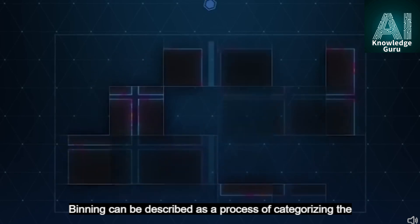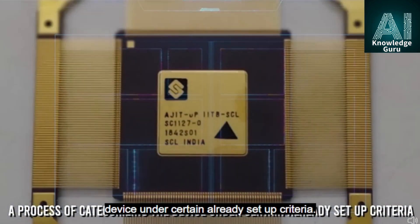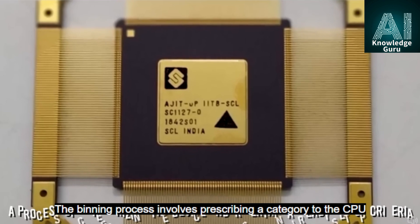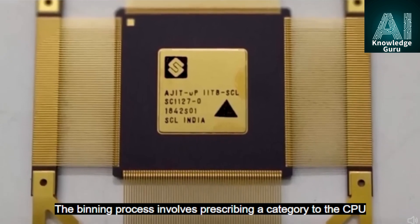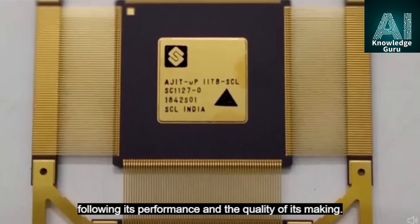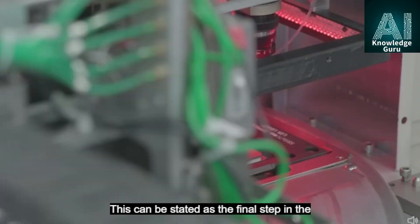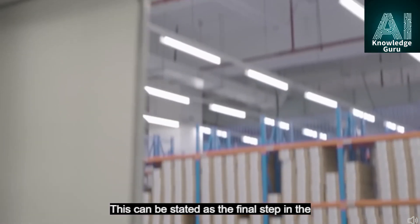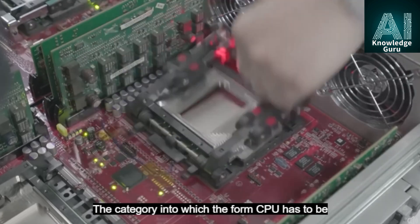Binning can be described as a process of categorizing the device under certain already set up criteria. The binning process involves prescribing a category to the CPU following its performance and the quality of its making. This can be stated as the final step in the establishment of the CPU.